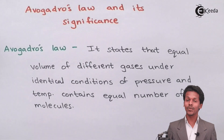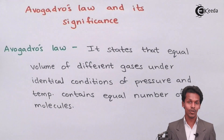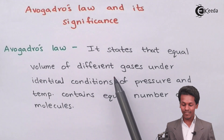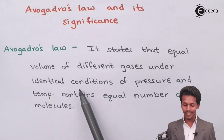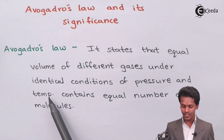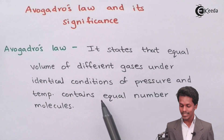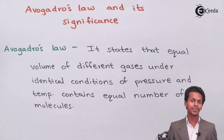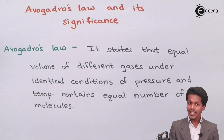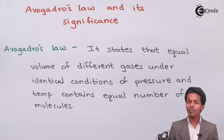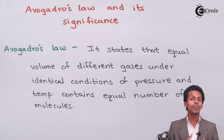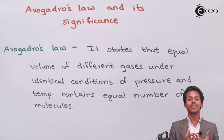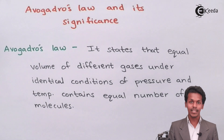As mentioned on your screen, I am talking about Avogadro's Law, which states that equal volumes of different gases under identical conditions of pressure and temperature contain equal numbers of molecules. We can say that if the number of particles of a gas is increased, then eventually the volume of the gas will also increase.